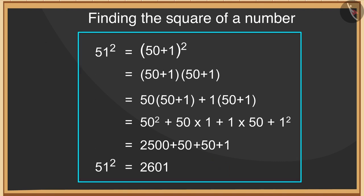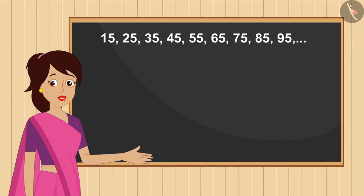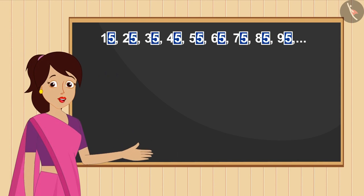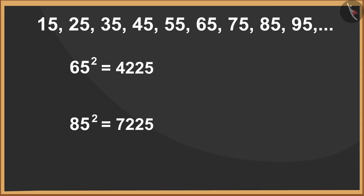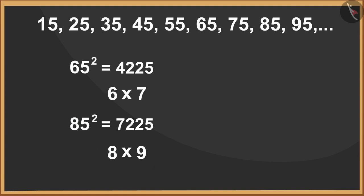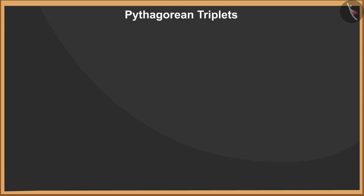With the help of this method we can easily find the square of any two-digit number. Did you know that we can find the square of all numbers ending in five using a simpler method? For instance, consider the square of 65 and 85. Here we add one to the digit in the tens place and multiply that sum by the tens digit, then multiply the result by 100 and add 25 to it.